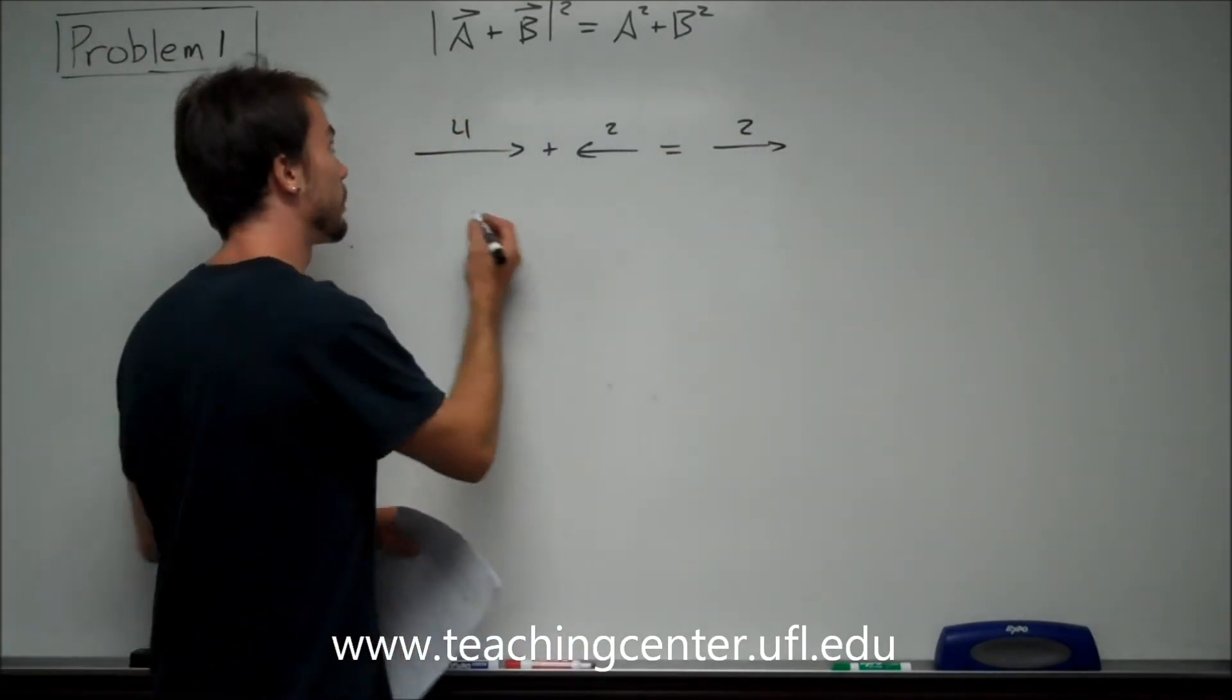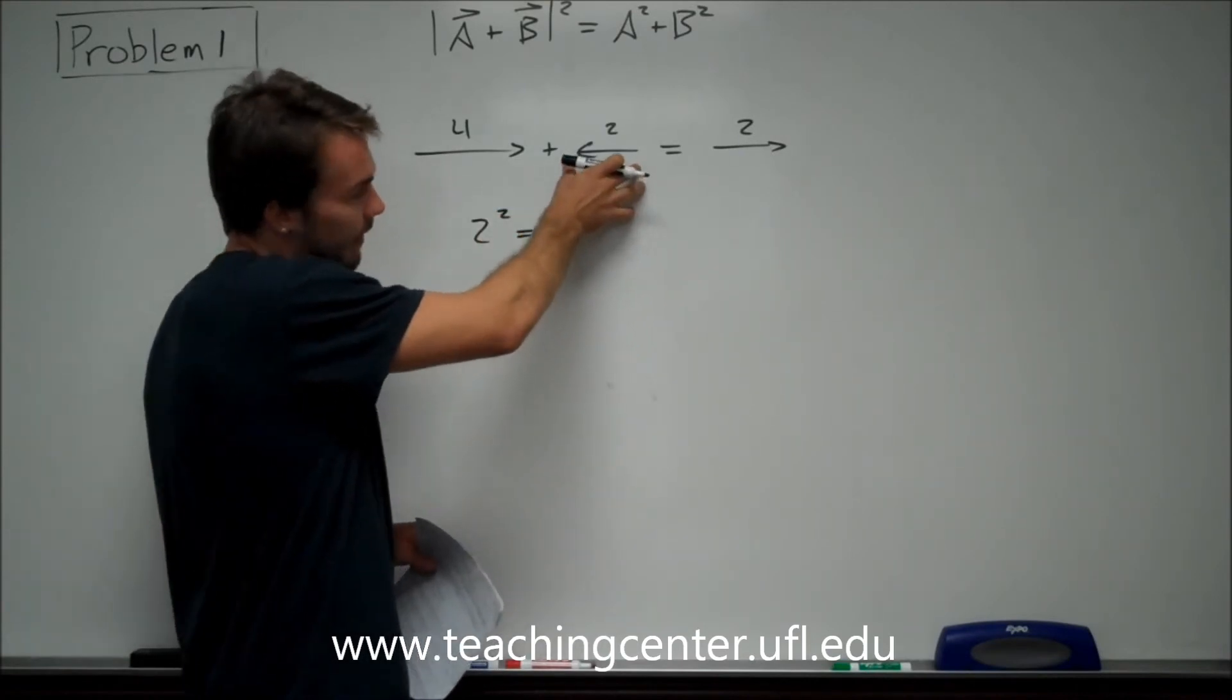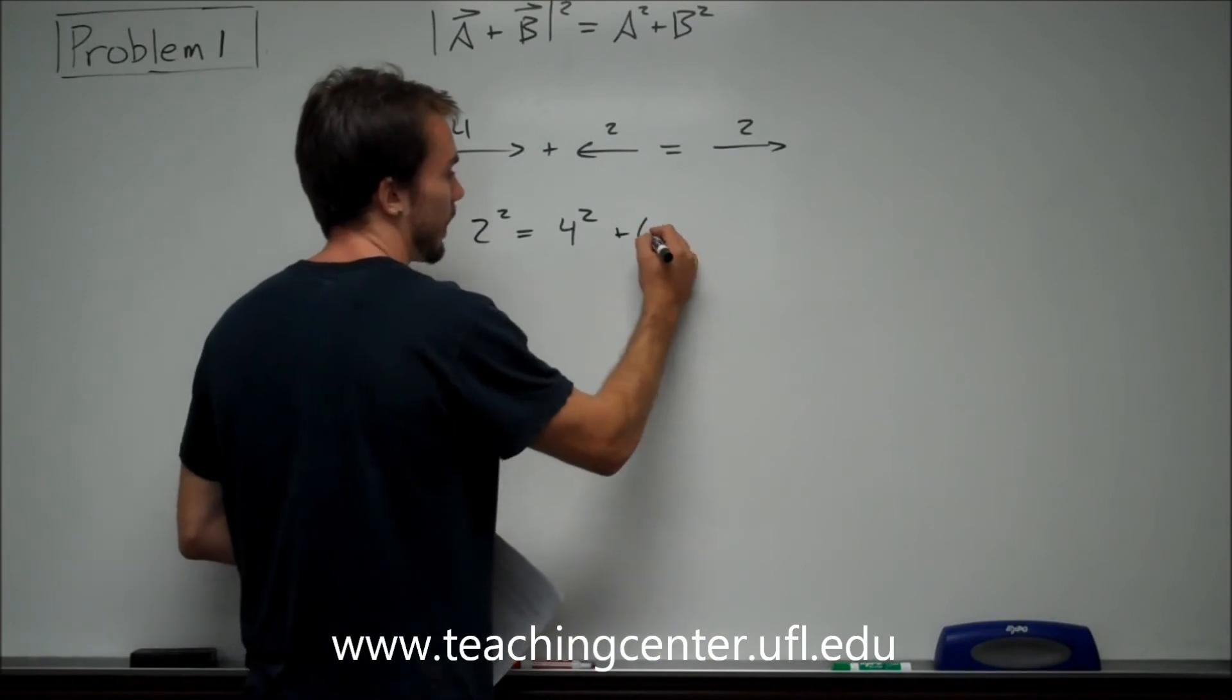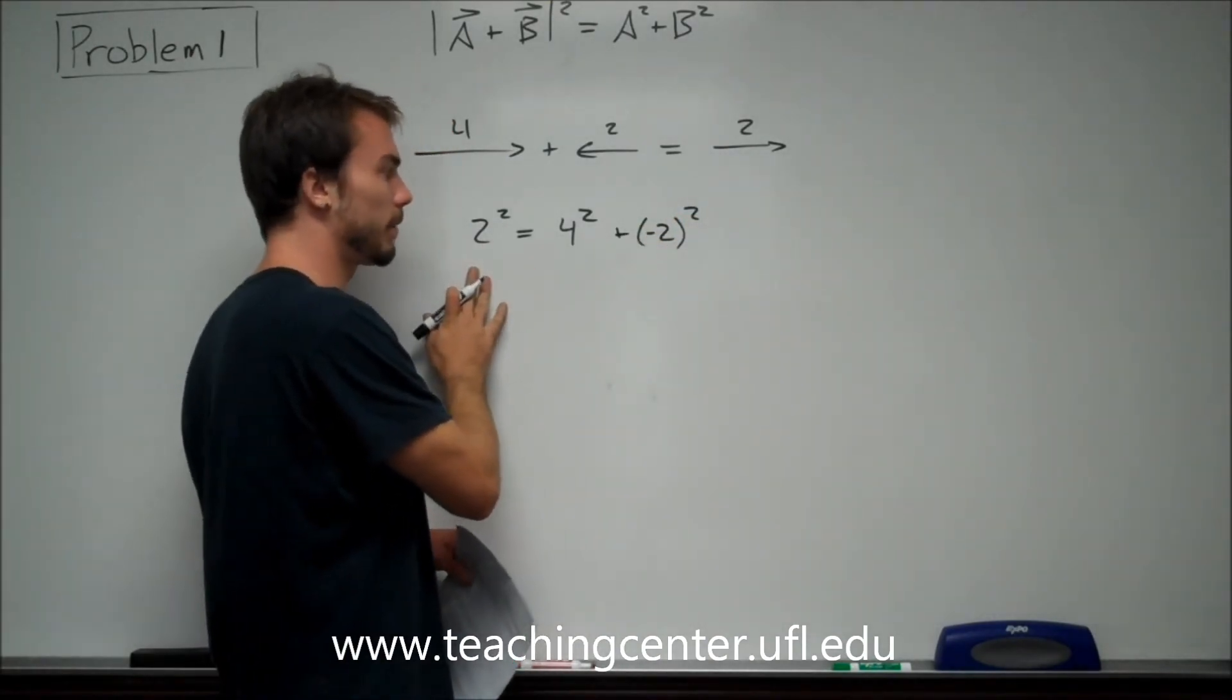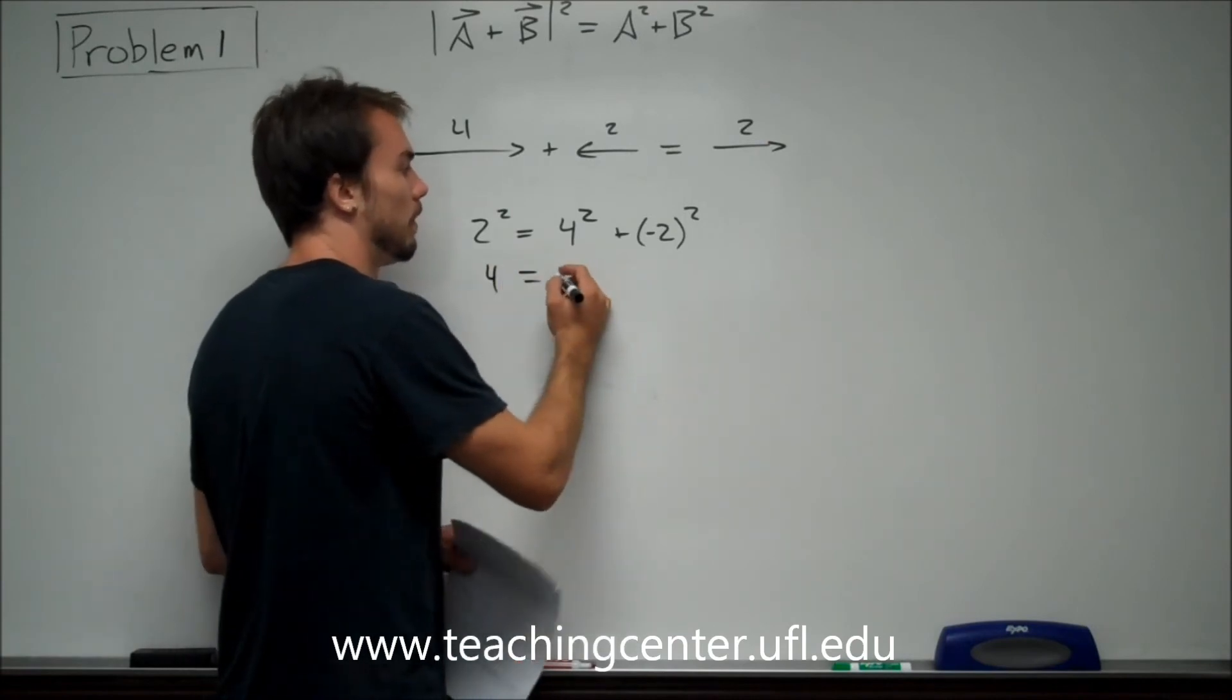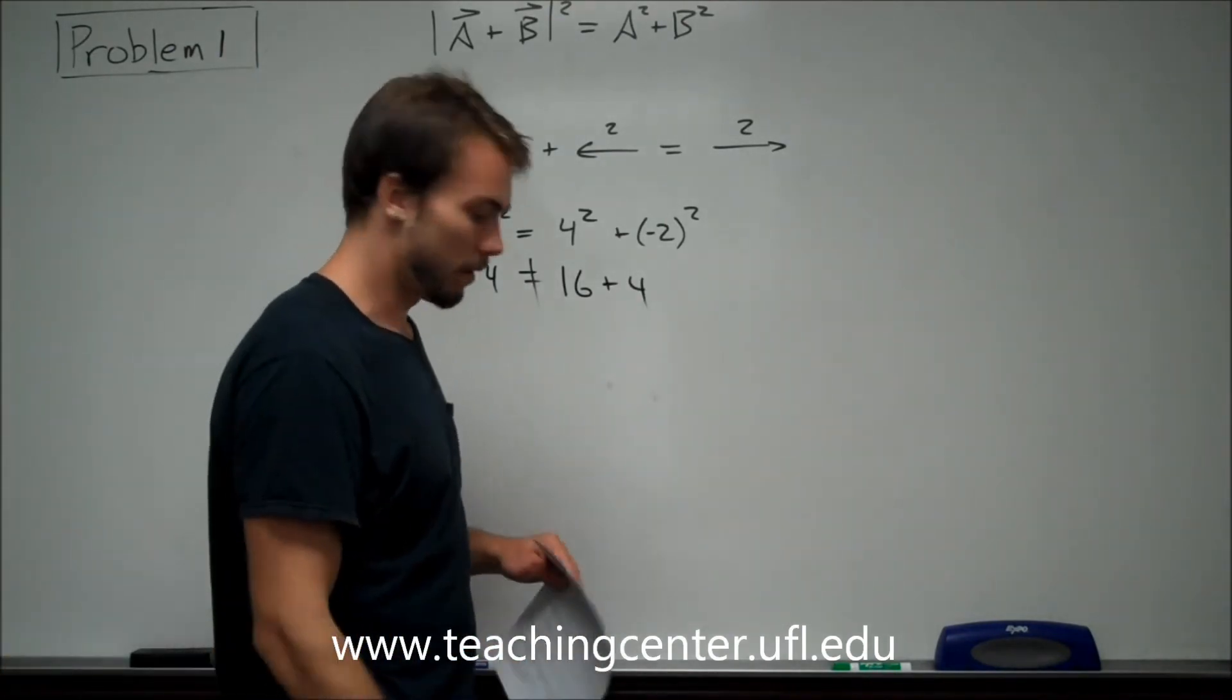Add these two vectors together, you get 2. Take the magnitude, it's simply 2 because it's only one vector. You can say 2 squared is equal to 4 squared, and this would technically be negative because it's pointing to the left. But it's not going to matter when you square it, because 2 squared is not going to equal 4 squared plus negative 2 all squared. This is 4 equals 16 plus 4, and that's obviously not true as well. So number 3 is not an option.